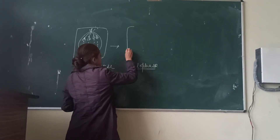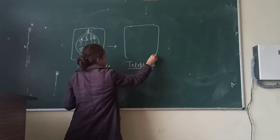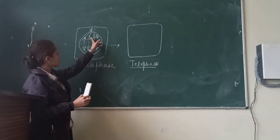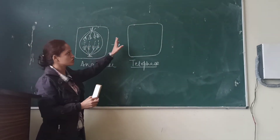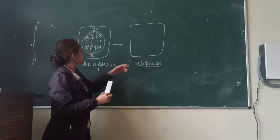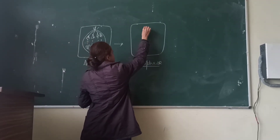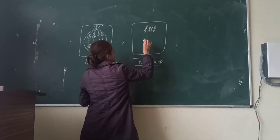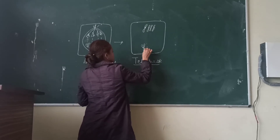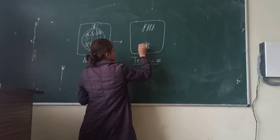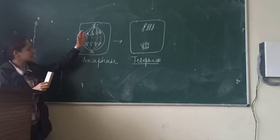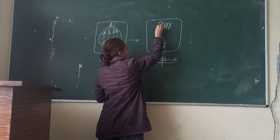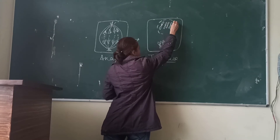The next phase is telophase. In telophase, all the chromosomes get arranged toward the opposite poles, and the spindle fibers disappear. Formation of the nuclear membrane takes place.